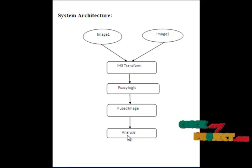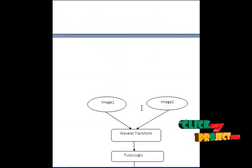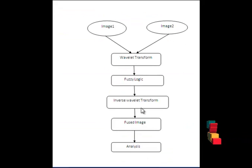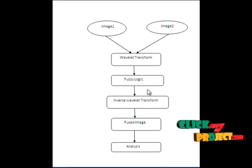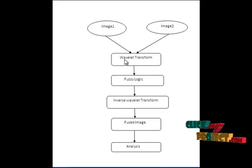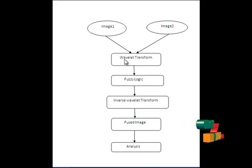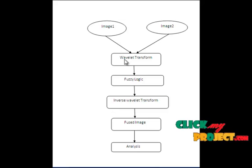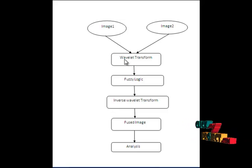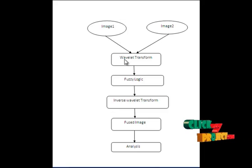Here we use the wavelet transform. This is another flow of the project. We provide two input images to the wavelet transform. Wavelet is performed to decompose the image. It transforms the image from the spatial domain to the frequency domain, and will separate the image into subbands.